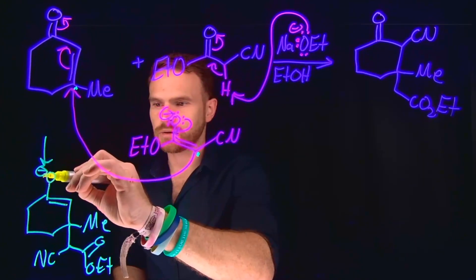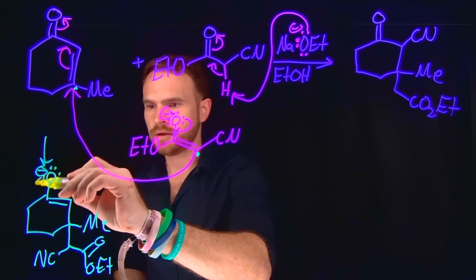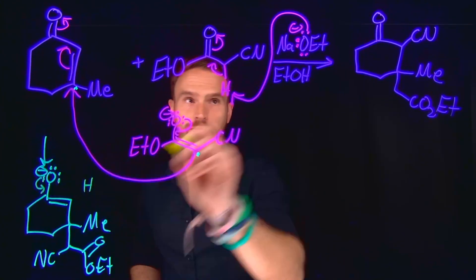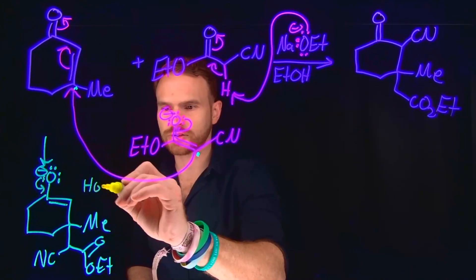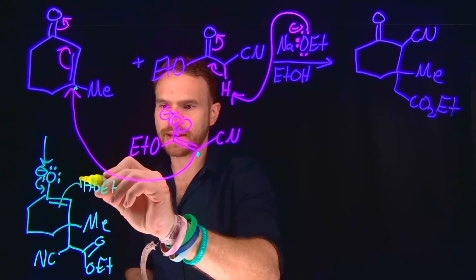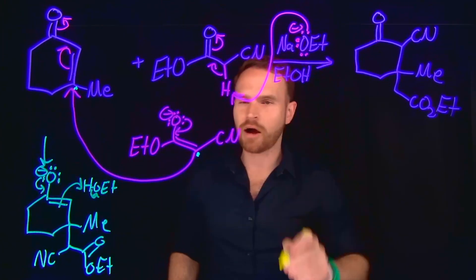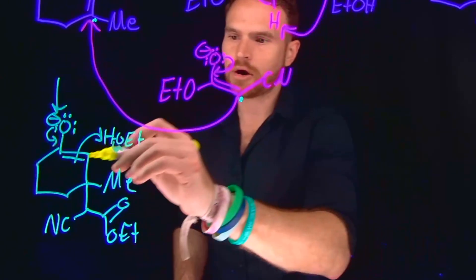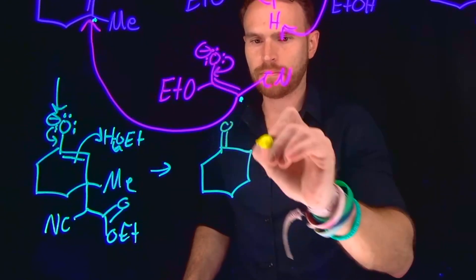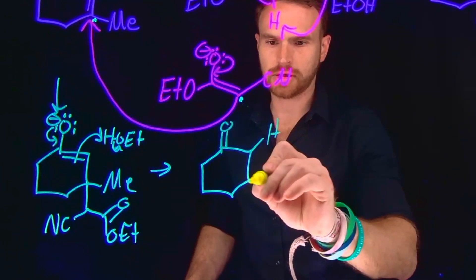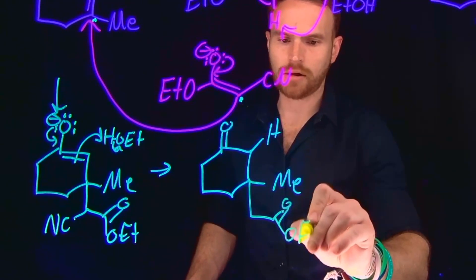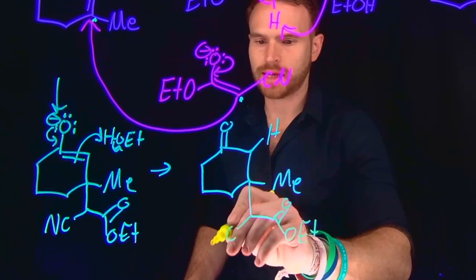Now the next step in this transformation will be for these electrons to come back down, allowing us to use these pi electrons to act as a nucleophile. Remember, in our first step we formed ethanol, but we also have ethanol as our solvent, which means that these pi electrons can come and abstract that hydrogen to regenerate our sodium ethoxide base, but also now give us a neutral compound. So the product of this transformation is going to be neutral, where we have placed our hydrogen at this position, we have our methyl group at this position, and then we also still have our ester as well as our cyano group located at this position.